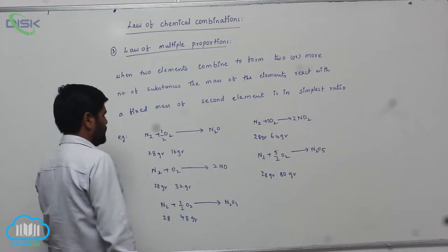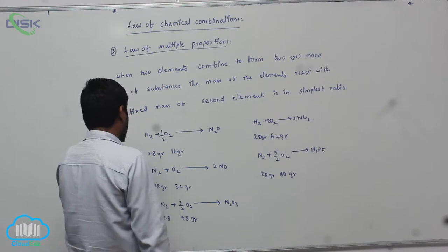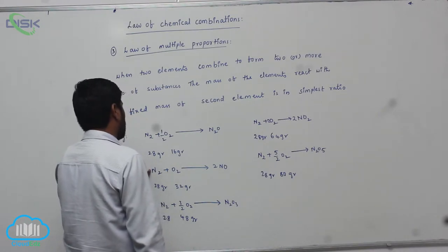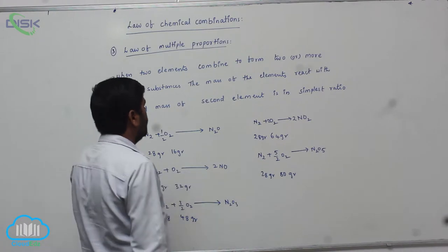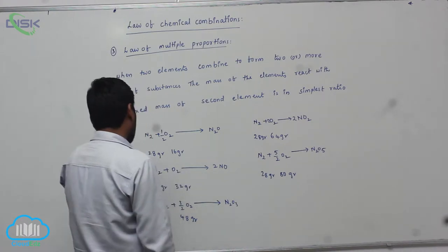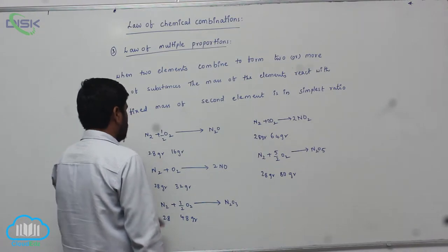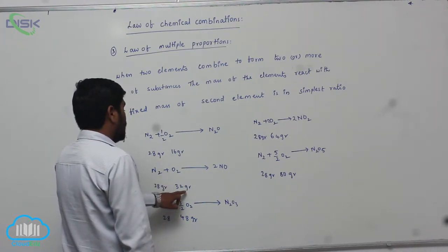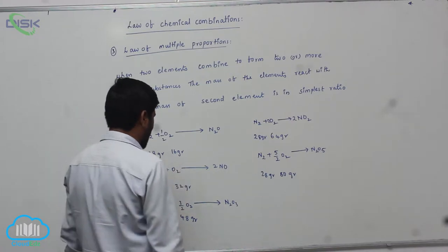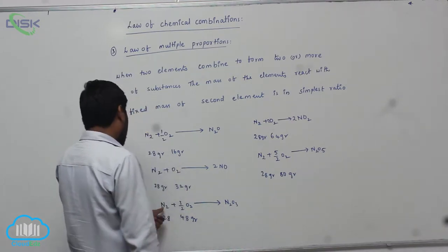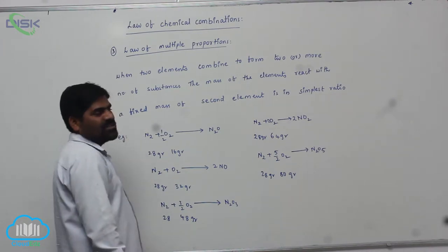In the second case, N₂ gas reacts with O₂ to form NO (nitric oxide). Here, 28 grams of nitrogen reacts with 32 grams of oxygen.